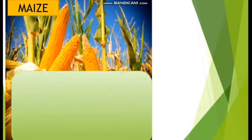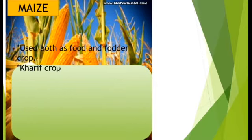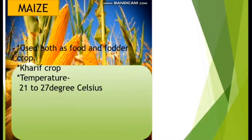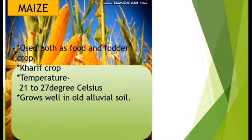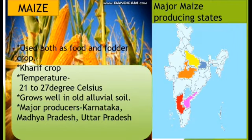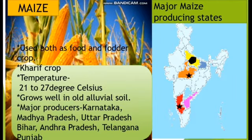Maize is a crop used both as food and fodder. It is a Kharif crop that requires a temperature of 21 to 27 degrees Celsius and grows well in old alluvial soil, which is mostly found in the North Indian plains. It is cultivated all over India. Use of modern inputs such as HYV seeds, fertilizers, and irrigation have contributed to the increasing production of maize. Major maize producing states are Karnataka, Madhya Pradesh, Uttar Pradesh, Bihar, Andhra Pradesh, and Telangana.